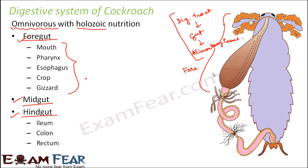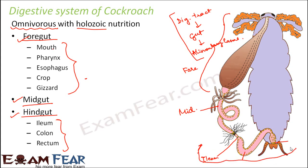After the gizzard, you see a tube-like structure which is the midgut. The hindgut consists of the ileum, colon, and rectum. Looking at the diagram, this portion is the ileum, followed by the colon, and then the rectum — together forming the hindgut.